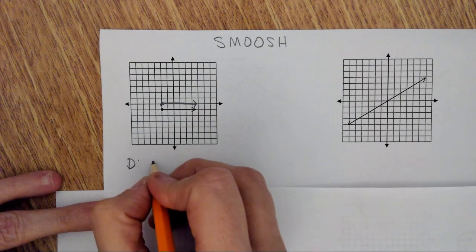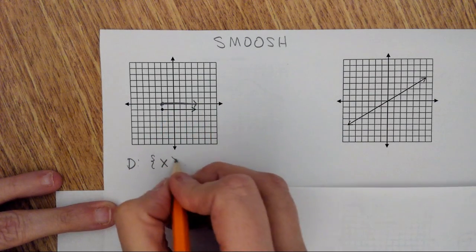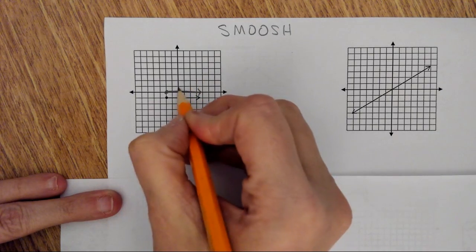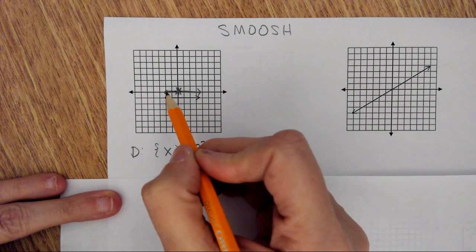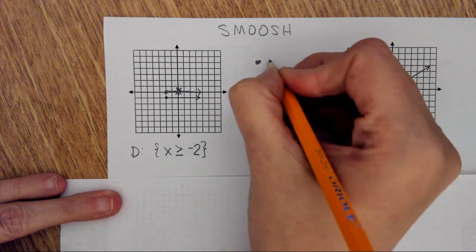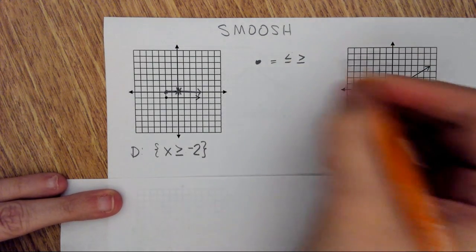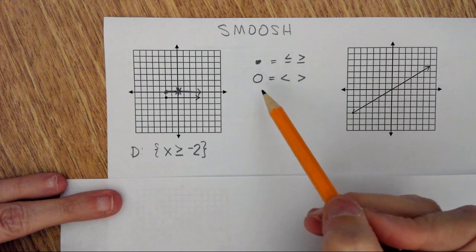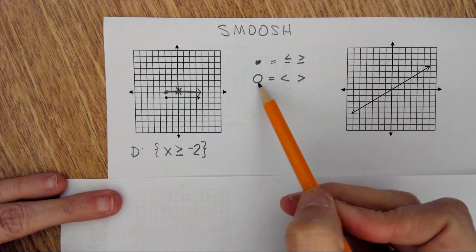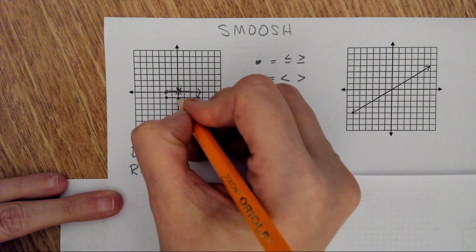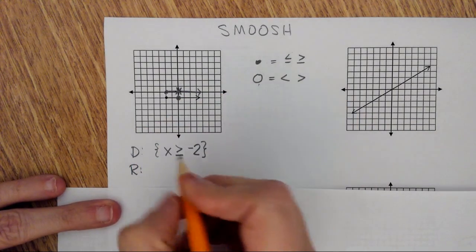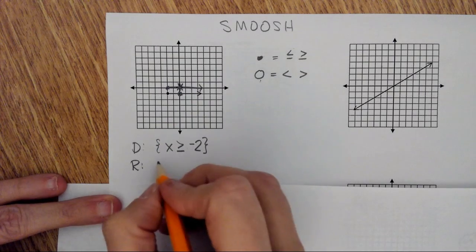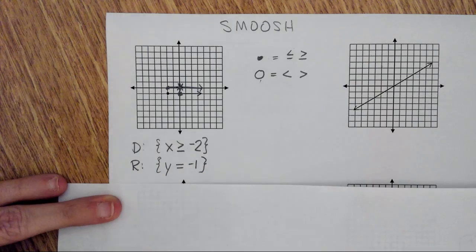What I see for my domain is that my x values are greater than or equal to negative 2. I went to negative 2, and since it's a dot — remember, a dot means greater than or equal to, or less than or equal to — I can include the point. A force field means less than or greater than, so you can't include it. When I look at the range, the arrow only goes side to side, not up or down, so my y value is y equals negative 1.